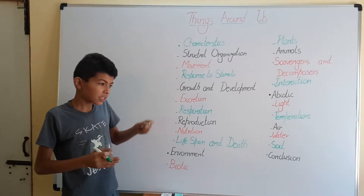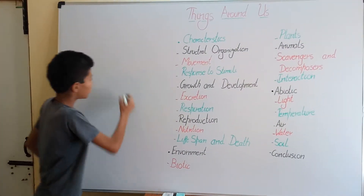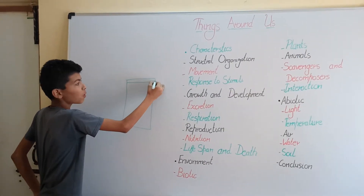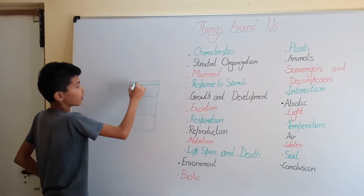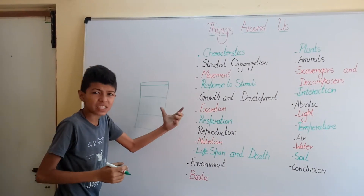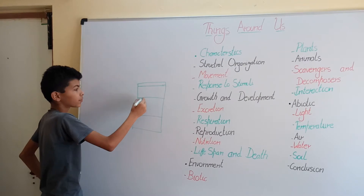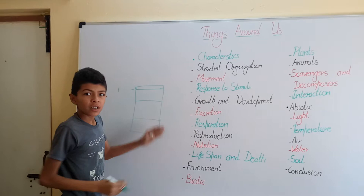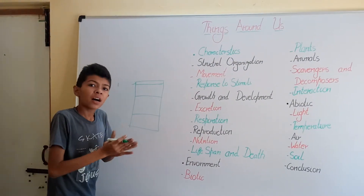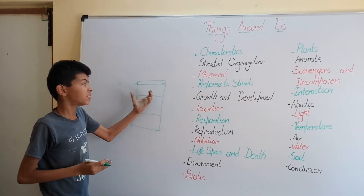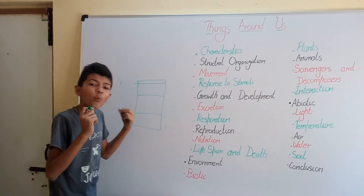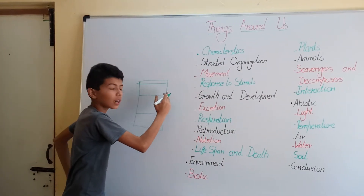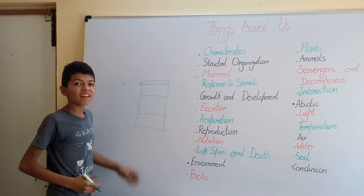Then we have soil. Soil is the ground layer beneath us and it has different layers. The topmost part, which is rich in nutrients, is called humus. Below that is the upper topsoil layer, which has some nutrients and is powdery. Then we have parent rock and bedrock.